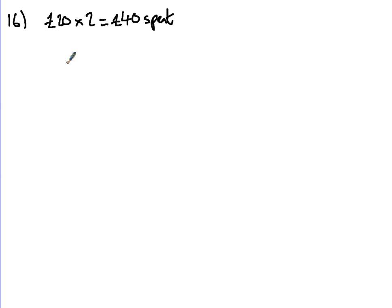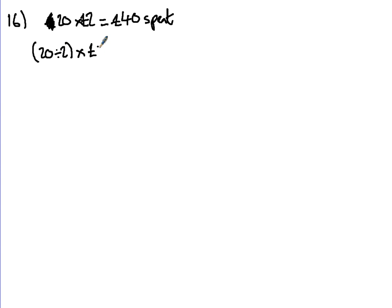Half the books — so that's 20 divided by 2 to get half, which is 10. And he sold each of them for £3.50. So it's 10 times £3.50 — the numbers move up one each — so that gives you £35.00.